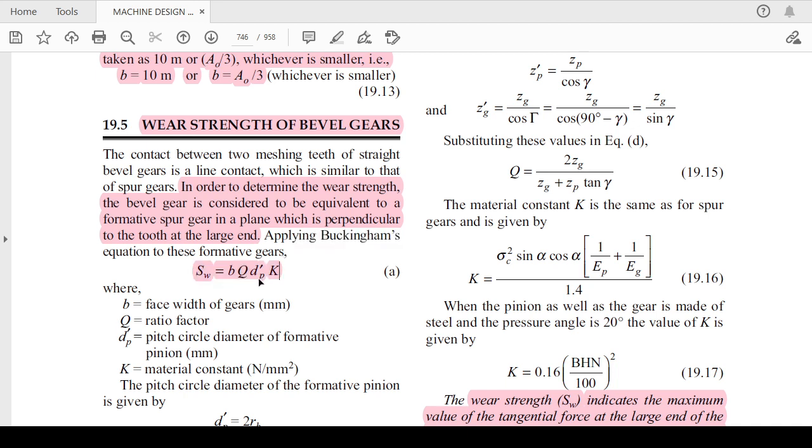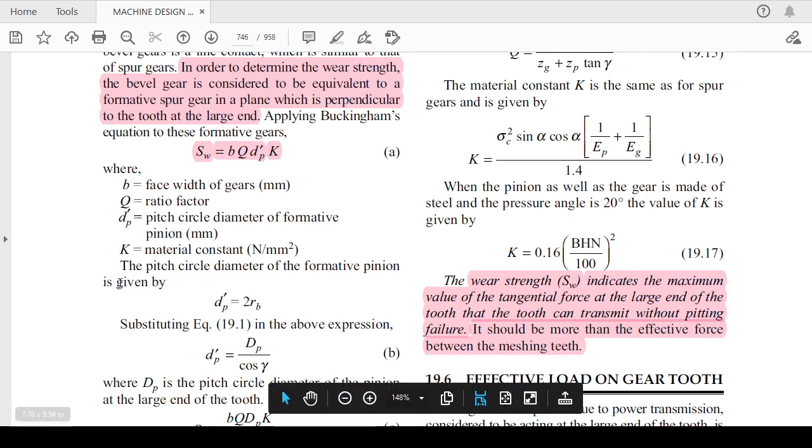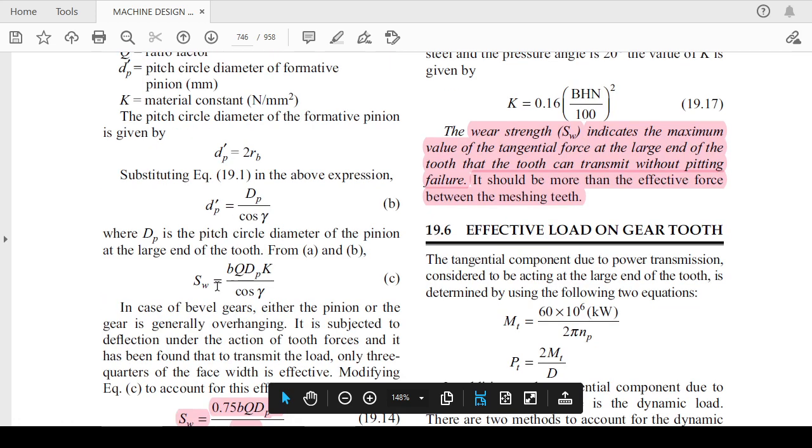For the formative spur gear, the wear strength can be written as b multiplied by Q D_p dash K, where b is face width, Q is your ratio factor, D_p is your pitch circle diameter of formative pinion, K is a material constant depending on your material properties. The pitch circle diameter of the formative pinion can be rewritten as 2 times R_b or D_p divided by cos gamma.